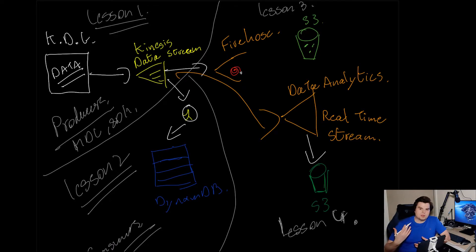Here's a little diagram I drew earlier. In lesson one, what we're going to do is use the Kinesis data generator, which is a free AWS service that lets us produce data without having to worry about it ourselves. We're going to use that to put data onto a Kinesis data stream, and that's the first AWS service we're going to encounter.